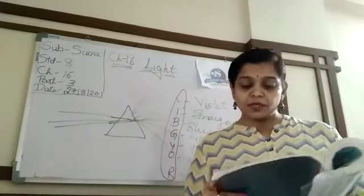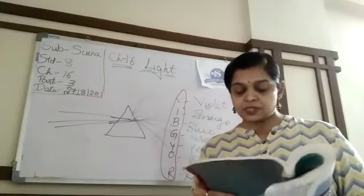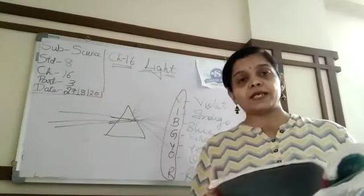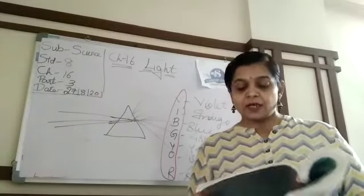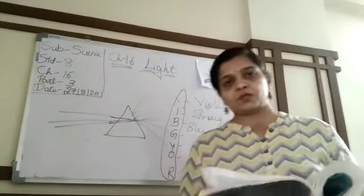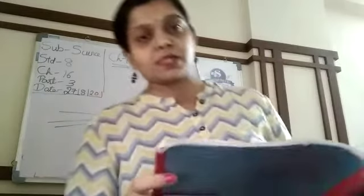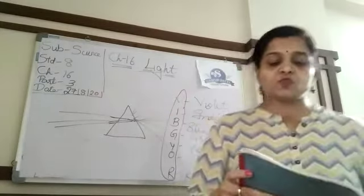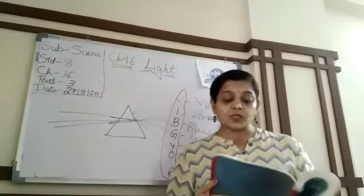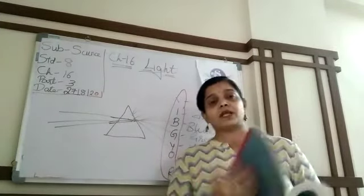The splitting of light into its colors is known as dispersion of light. Rainbow is a natural phenomenon showing dispersion. Now, section 16.7 — what is inside our eyes. We see things only when light coming from them enters our eyes.